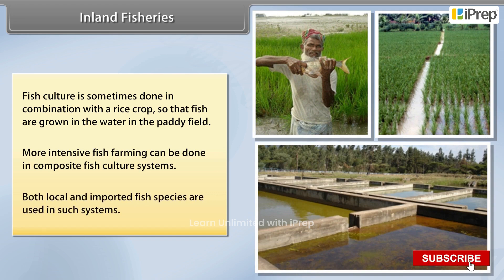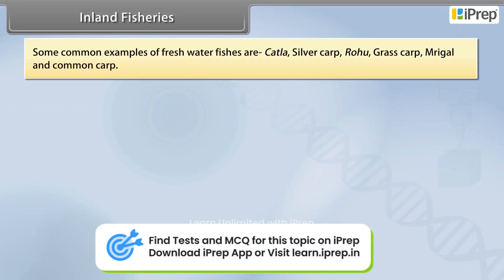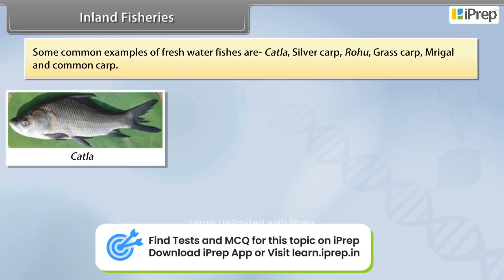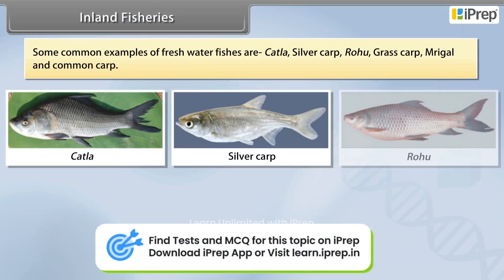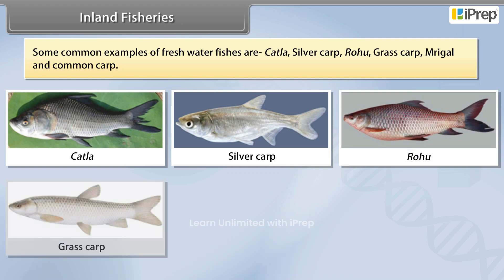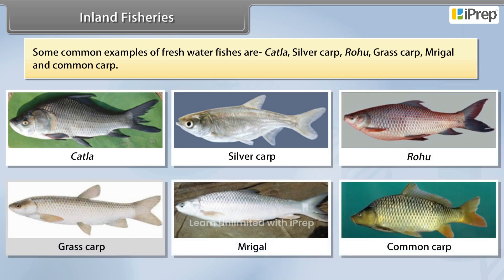Some common examples of freshwater fishes used in such systems are katla, silver carp, rohu, grass carp, mrigal, and common carp.